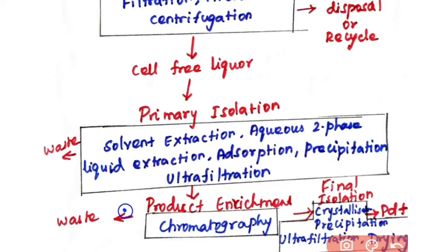The next step is product enrichment. In product enrichment, you mostly use chromatographic techniques to purify your product. Here you separate impurities that have the same properties as your product — meaning the product and impurities share similar characteristics. This makes the product enrichment step highly selective.